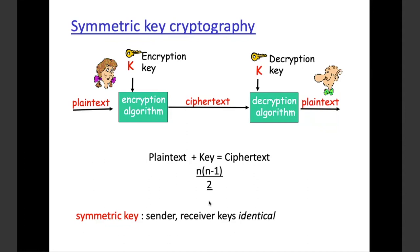So n is the number of parties, and the formula is n(n-1)/2. Remember, we are going to explain this formula in the upcoming slides, but sender and receiver will have the same key in symmetric key — there is only one key being used from one person to another.